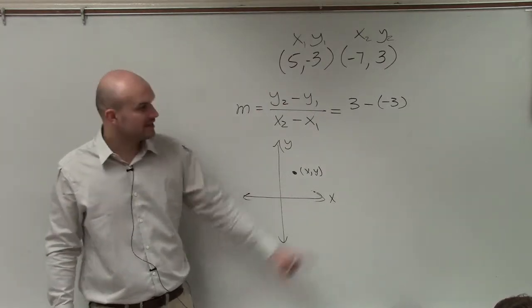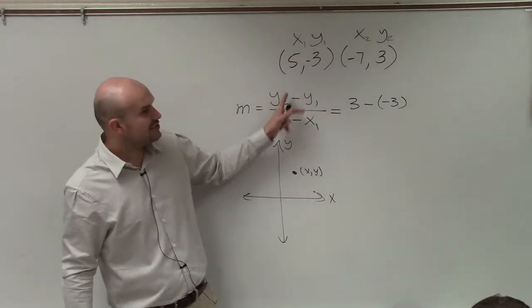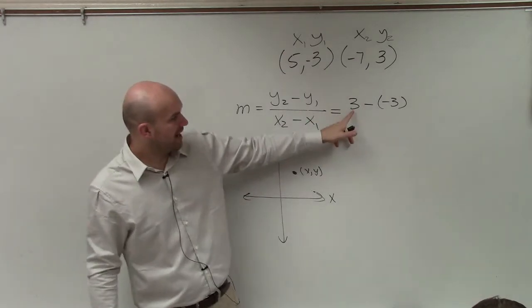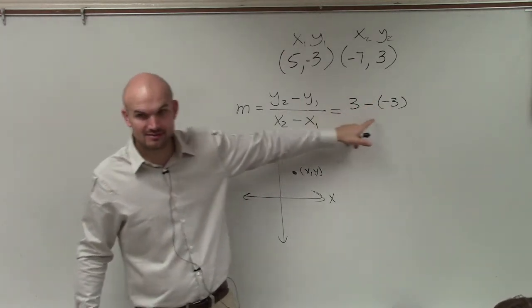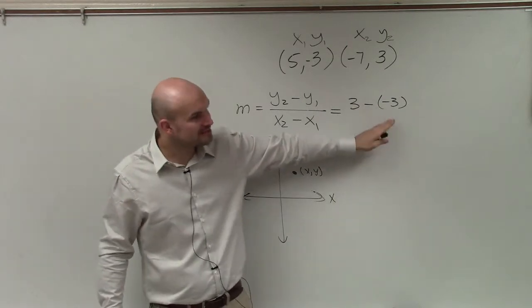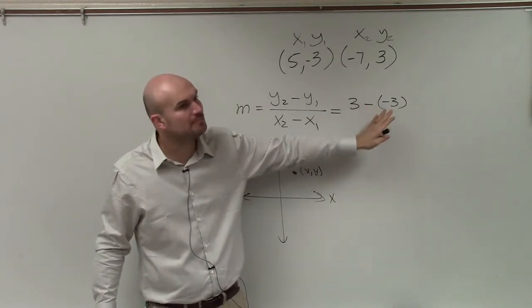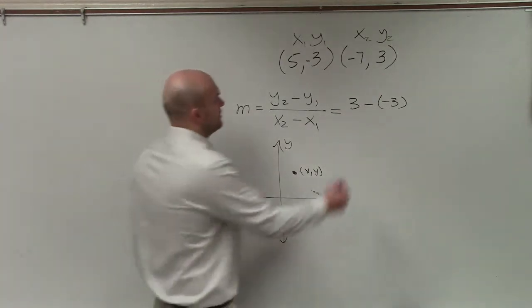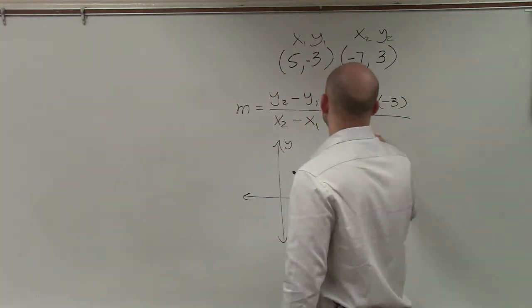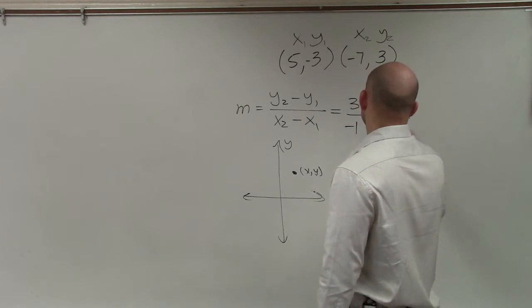is students just automatically write the first one as 3 minus 3. It is not 3 minus 3. It's 3, it's y2 minus y1. y2 minus y1. Do you guys see that? So by applying parentheses, I'm making sure that I am including both the subtraction and the negative sign. Then over here, I have negative 1 minus 5.